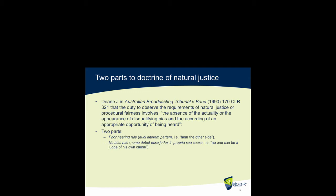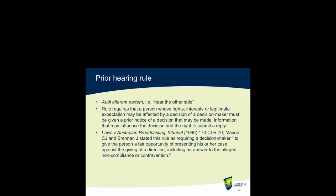Let's look at the first component: the prior hearing rule. The rule requires that a person whose rights, interests, or legitimate expectations may be affected by a decision must be given prior notice of a decision that may be made, or information that may influence the decision, and the right to submit a reply. Before a person's rights, interests, or legitimate expectations may be interfered with by a decision maker, that person must be given an opportunity to be heard.